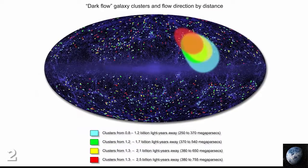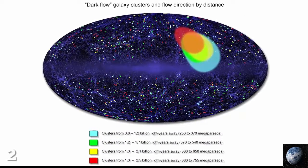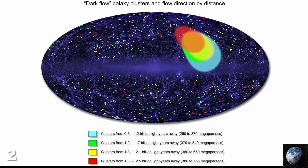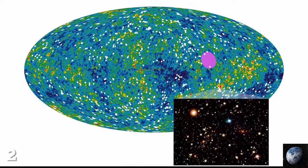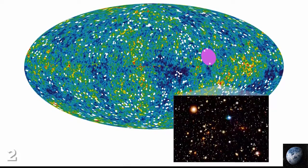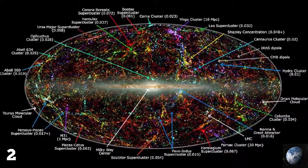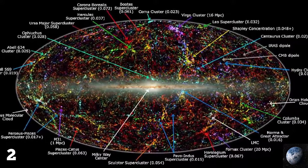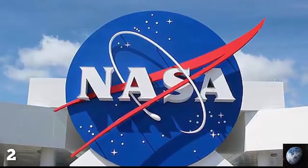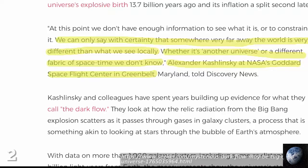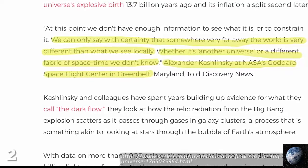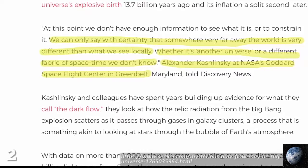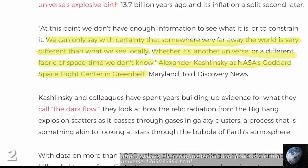Scientists call this force dark flow, and the colored spots on this image show just how much of our universe is affected by this mysterious phenomenon. Some astronomers believe that whatever this force is, it may have been created a fraction of a second after the Big Bang. On this subject, NASA researcher Alexander Kashinsky was quoted as saying, 'We can only say with certainty that somewhere very far away the world is very different from what we see locally. Whether it's another universe or a different fabric of space-time, we don't know.'